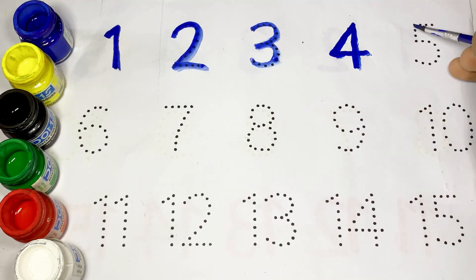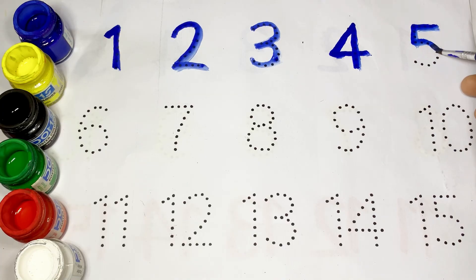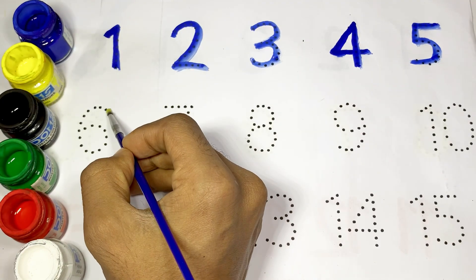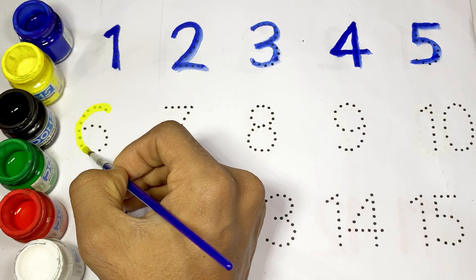This is five, F-I-V-E, five. Let's draw six and use yellow color. This is six, S-I-X, six.